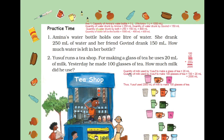Moving to the next question. Yusuf runs a tea shop. For making one glass of tea, he uses 20 ml of milk. Yesterday, he made 100 glasses of tea. How much milk did he use? You can see here — for making one glass of tea, 20 ml of milk is used. And yesterday, he made 100 glasses of tea.